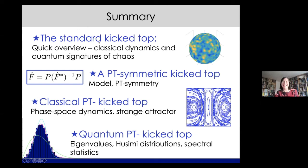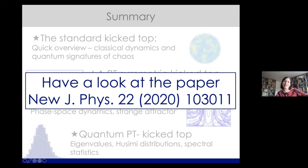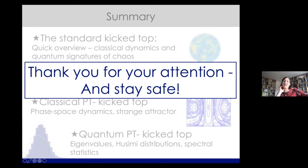To summarize: I introduced the standard kicked top to highlight quantum-classical correspondence features, then introduced a PT-symmetric kicked top with interesting classical dynamics including unbroken and broken PT symmetry phases. On the quantum side we looked at eigenvalue statistics, Husimi distributions, and the new idea of privileged trajectories to understand how they all link together. There are more questions than answers, but with many colorful pictures. More details can be found in the paper on the kicked top.